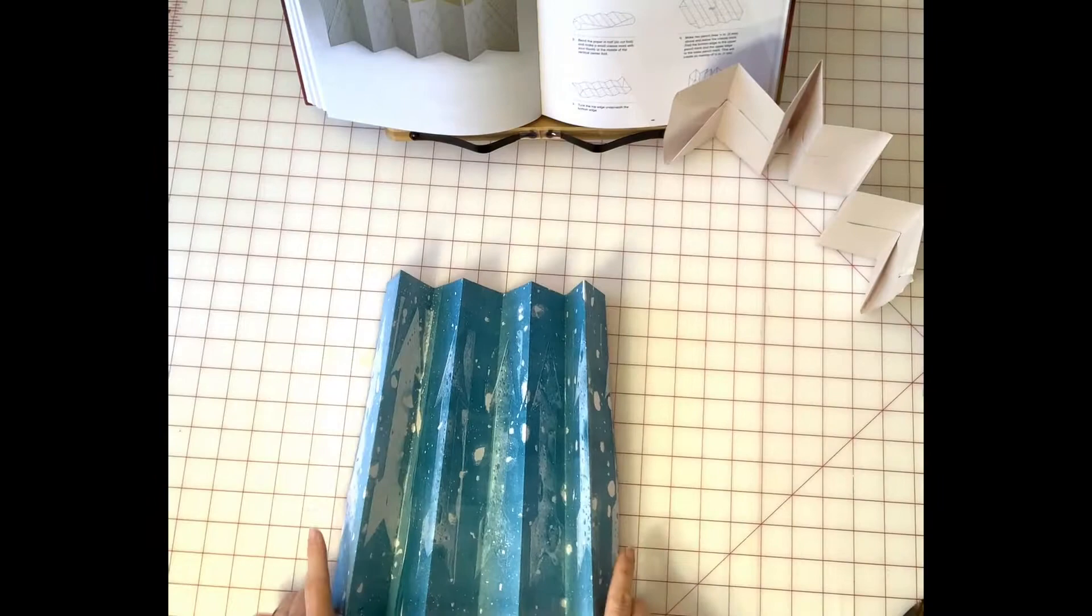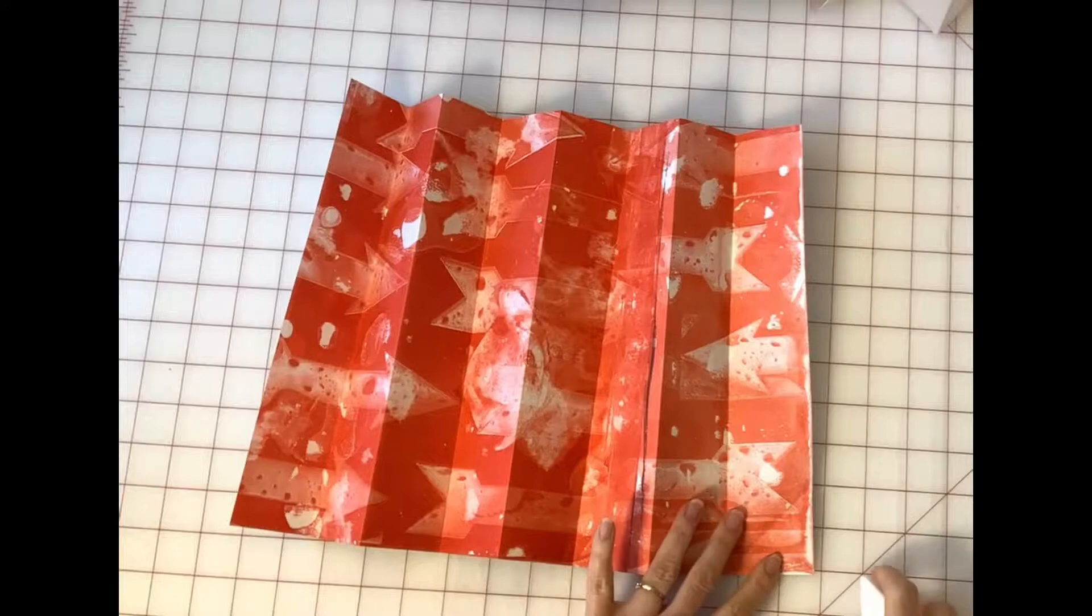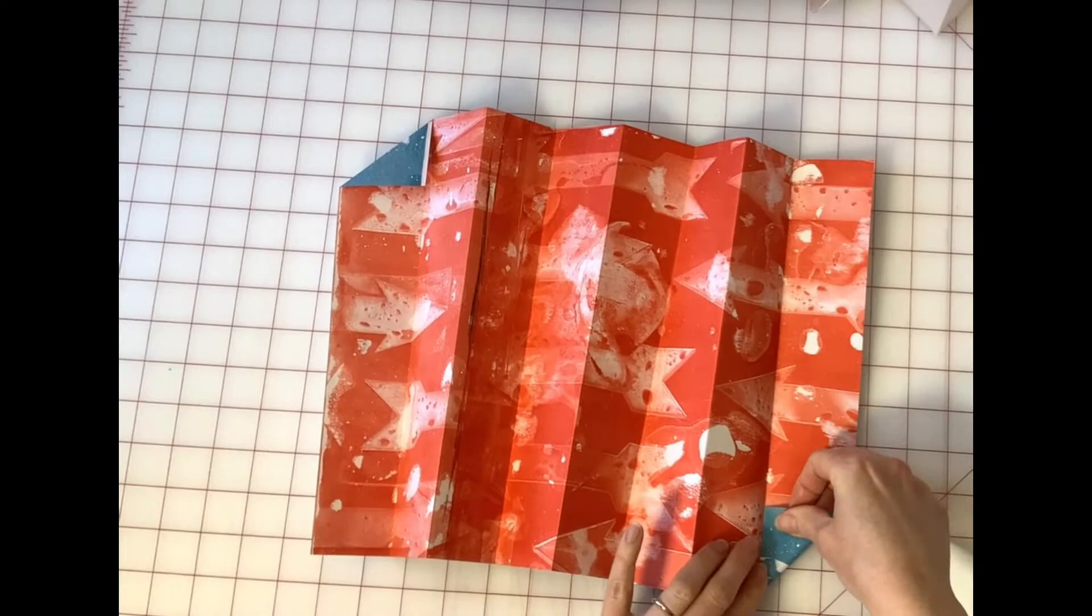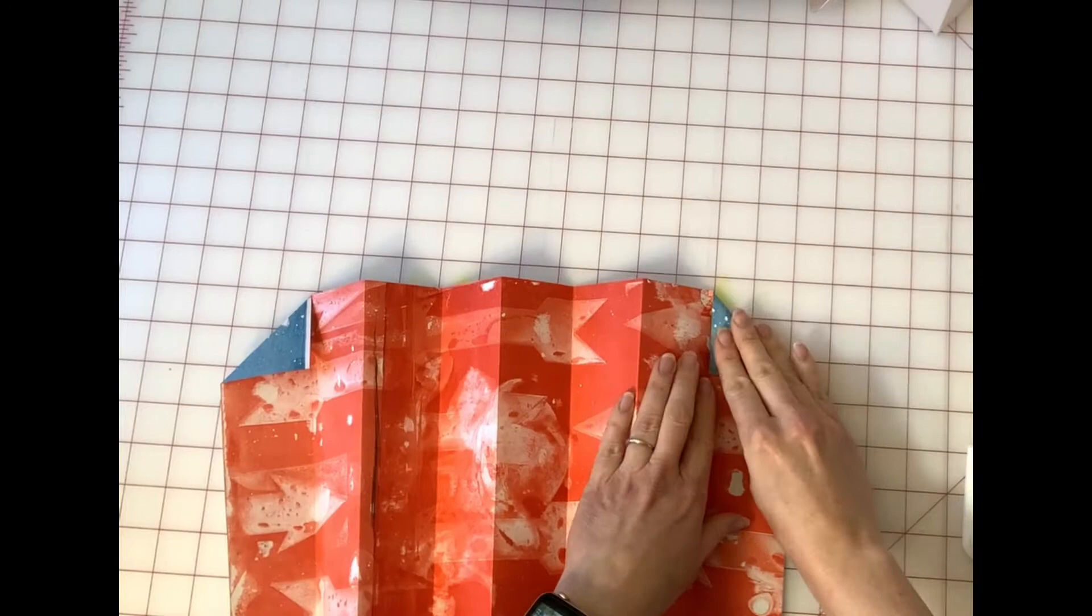So we've got our eight section accordion double sided and now we're going to start folding it in half. First you end up folding the small triangles out of the corners.